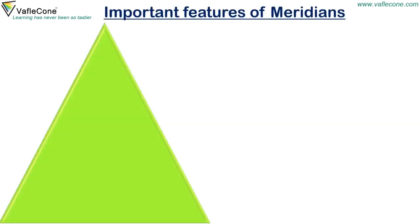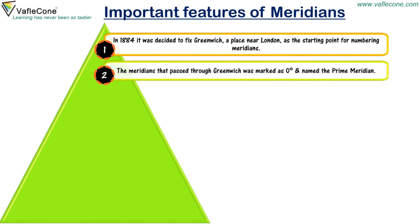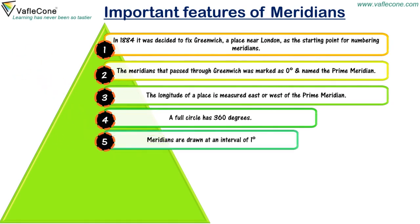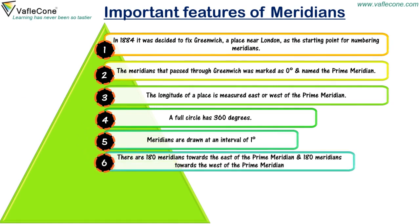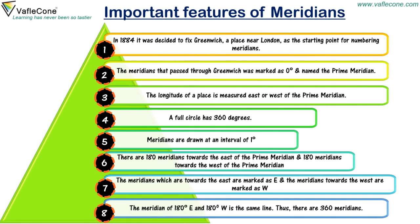Important features of meridians continued. In 1884, it was decided to fix Greenwich, a place near London, as the starting point for numbering meridians. The meridian that passed through Greenwich was marked as zero degrees and named the prime meridian. The longitude of a place is measured east or west of the prime meridian. A full circle has 360 degrees, and meridians are drawn at an interval of one degree. There are 180 meridians towards the east and 180 towards the west of the prime meridian, marked as E and W respectively. The meridian of 180 degrees E and 180 degrees W is the same line, giving a total of 360 meridians.